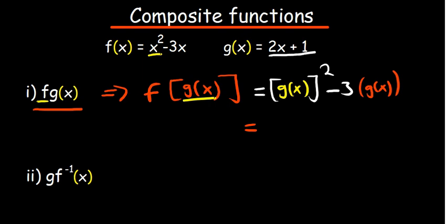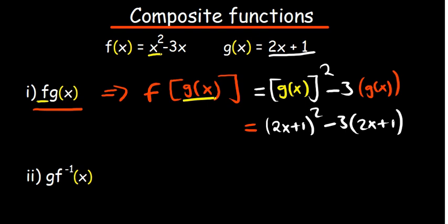Now we can substitute: g(x) is 2x plus 1. So we have (2x + 1) squared minus 3, and where there is g(x) again we're putting 2x + 1. The moment you understand that, composite functions are very easy — consider the first function and substitute the other part into it.